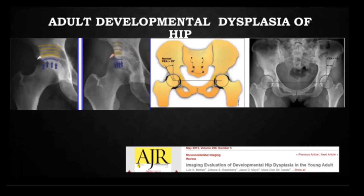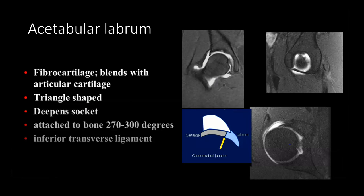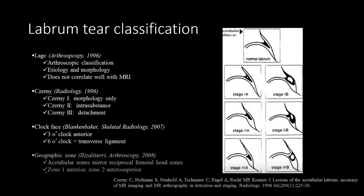There are many different measurements for the central edge angle and over-coverage. There is one article which shows all types of measurements. Now coming back to the acetabular labrum. As we have in the shoulder, here it is a little bit different. The labrum is deficient in the inferior aspect, especially around the 6 o'clock position. The cartilage and the labrum have a triangular shape, dark on all sequences.